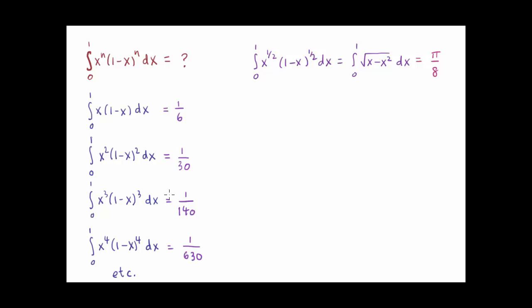In the same way, we can find that the third case simplifies to one over one-forty, and the fourth case to one over six-thirty. Now, if you like puzzles, you might want to pause the video and see if you can guess what the next number will be in the case where n is equal to five. There's a pattern hiding in these numbers, one over six and one over thirty and so on, and you might enjoy trying to find it.